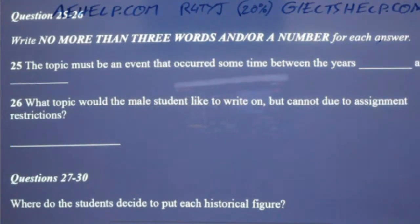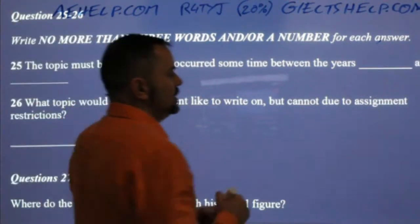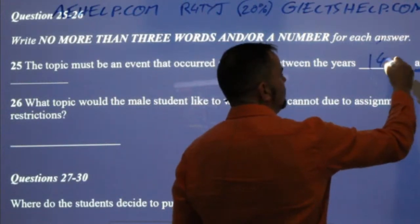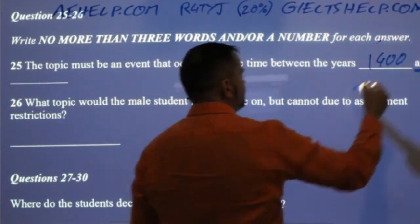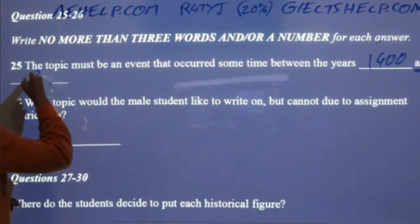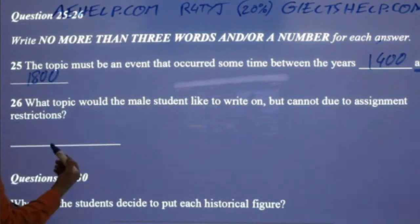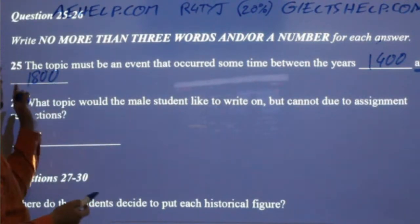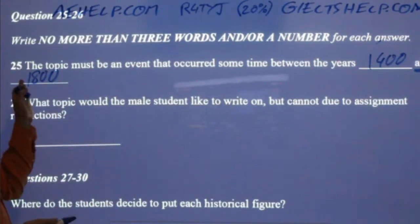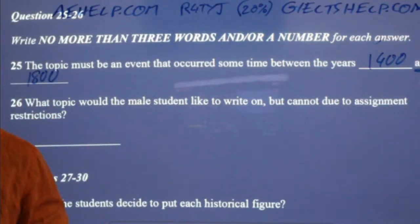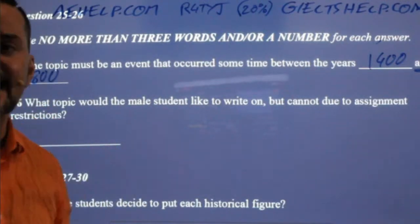1400 and 1800. You don't need 'and' — you just need the comma because it's already in your question sheet. So you just need 1400, 1800. Only the missing information. On your answer sheet, write 1400 and 1800, maybe with a comma or a dash.